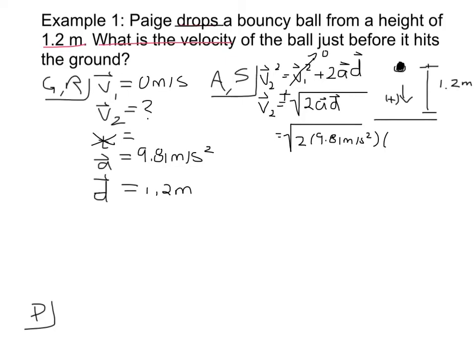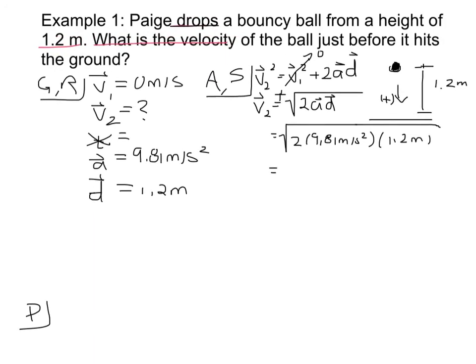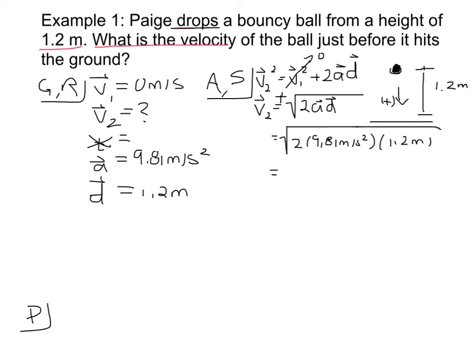And we can sub in our numbers here. Always put in our units so we can double check our work, make sure it makes sense, 1.2 meters. And if we multiply all of this, we get 2 times 9.81 times 1.2. We have the square root of 23.544.